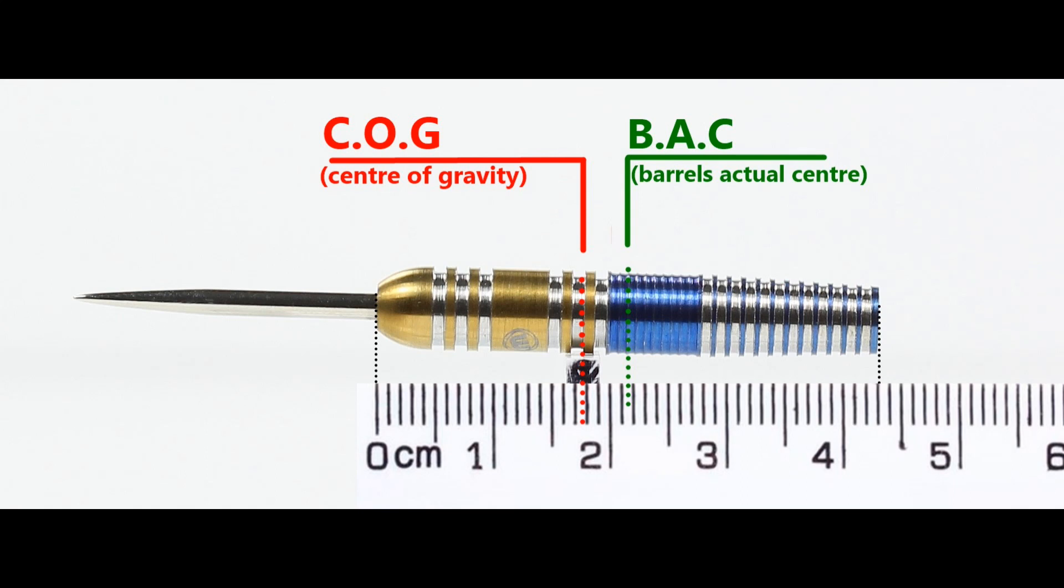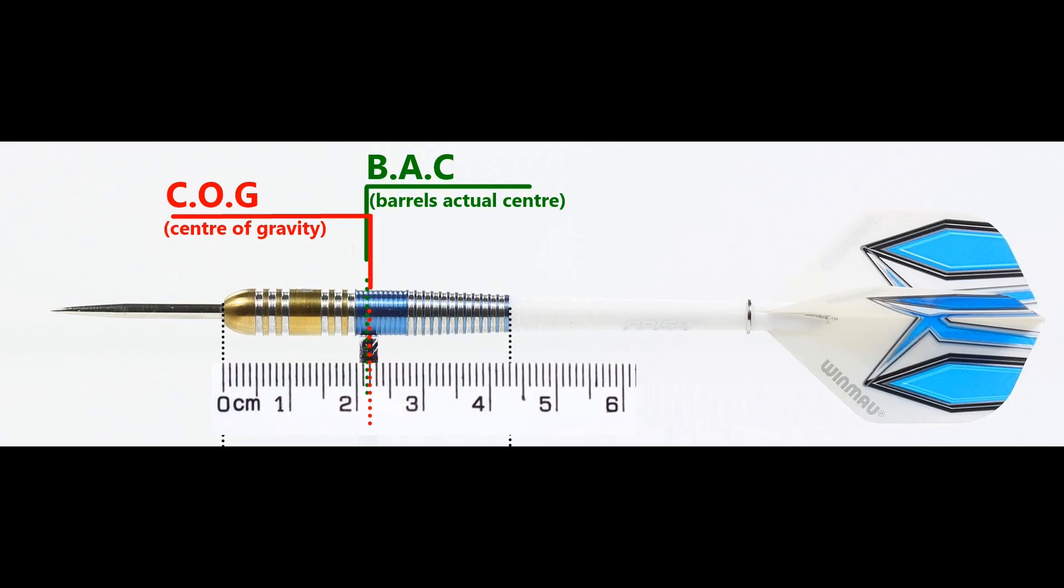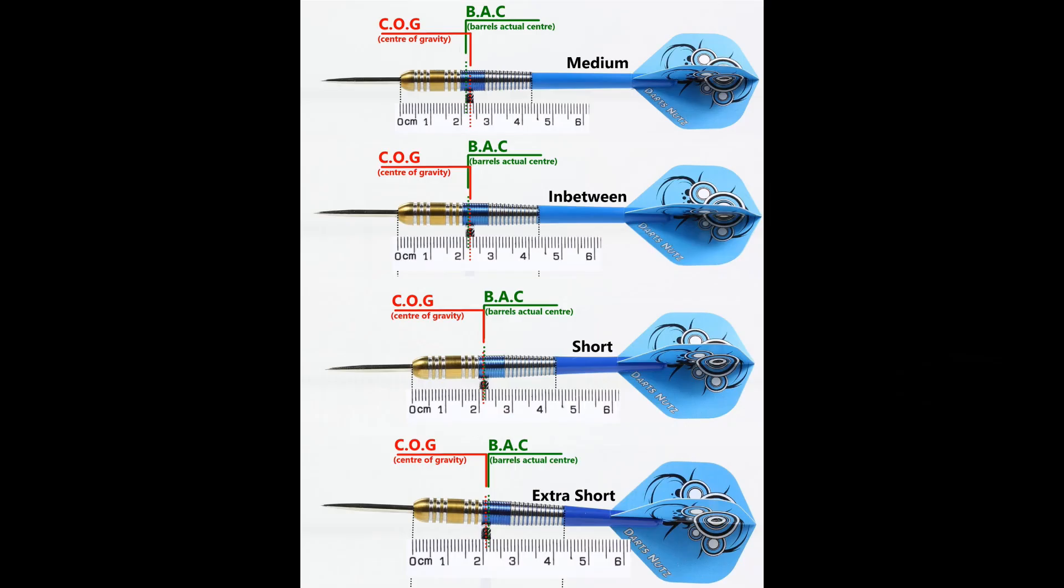With nothing attached the balance is towards the front. And with the supplied setup it's very slightly behind the centre point. And this is the balance with medium in between short, extra short stems and standard flights.